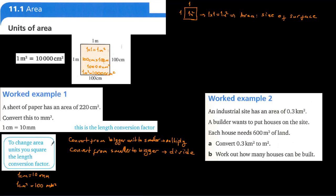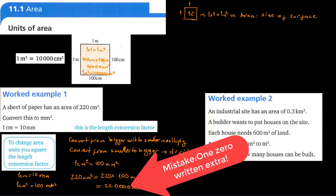So, since one centimeter square equals 100 millimeters square, that means 220 centimeters square is equal to 220 times 100 millimeters square, which equals 22,000 millimeters square.